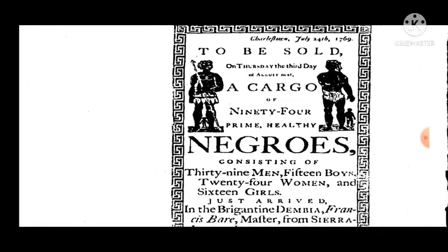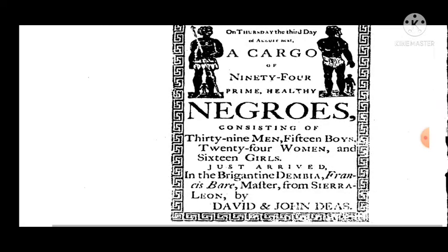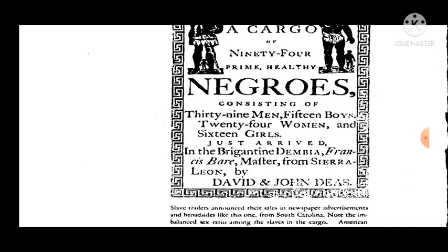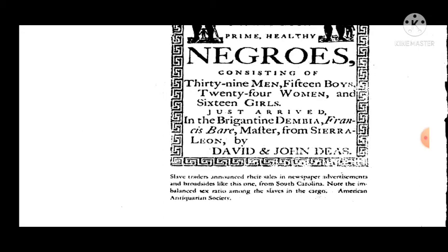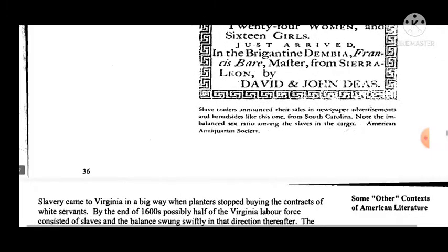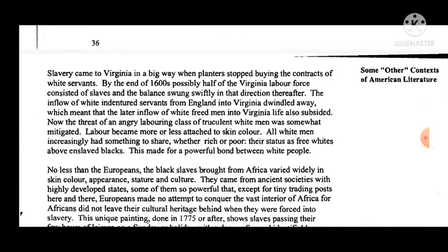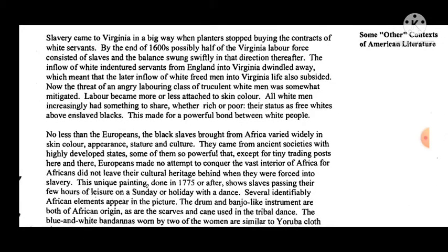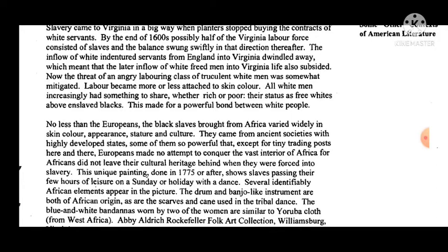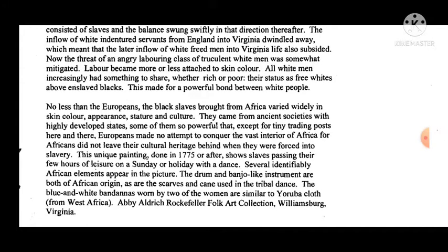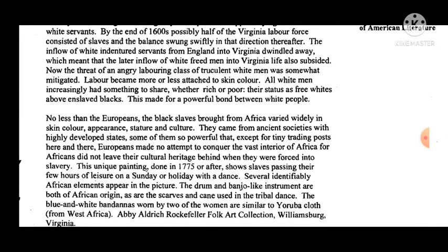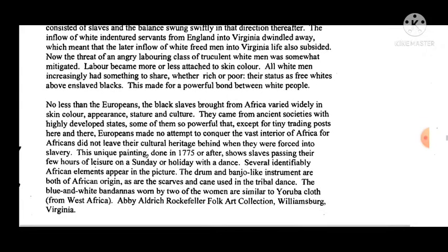Staff traders announced their slave sales in newspaper advertisements — for example, advertising the auction of 94 prime healthy Negroes consisting of 39 men, 15 boys, 24 women, and 16 girls. Slavery came to Virginia in a big way when planters stopped buying the contracts of white servants. By the end of the 1600s, possibly half of the Virginia labor force consisted of slaves, and the balance swung swiftly in that direction thereafter. The inflow of white indentured servants from England into Virginia dwindled away, which means that the later inflow of white freedmen into Virginia life also subsided.